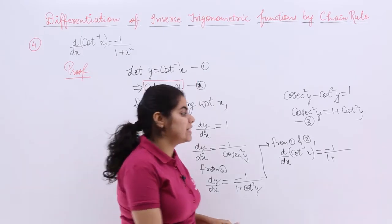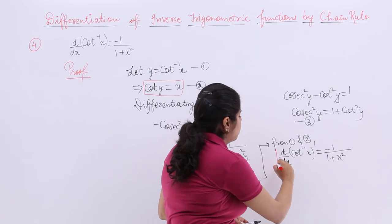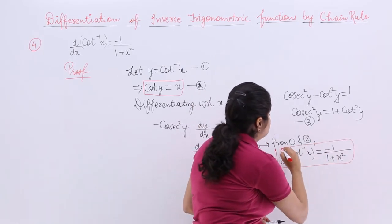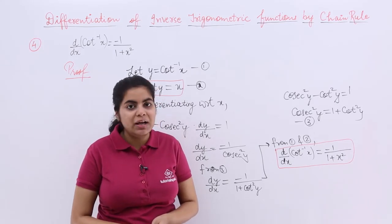What is cot y? From 2 is x. So it is x square. Let's place this in a box. So it is nothing but d/dx of cot inverse x is equal to minus 1 upon 1 plus x square.